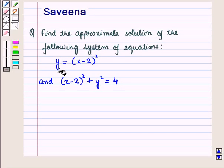Hello and welcome to the session. In this session we will discuss a question which says find the approximate solution of the following system of equations. The equations are y equals (x-2)² and (x-2)²